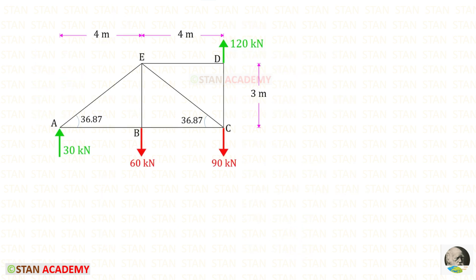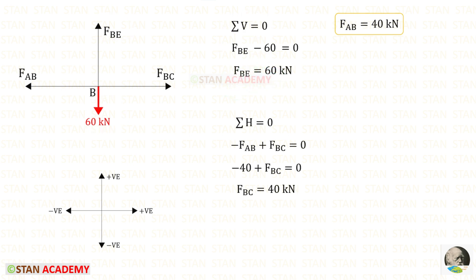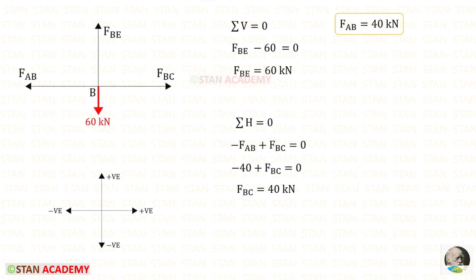Taking joint B to find member forces, applying Sigma V = 0: the upward force is positive and the downward load is negative, giving F_BE = 60 kN. Applying Sigma H = 0: F_AB acts towards the left (negative) and F_BC acts towards the right (positive). Applying the known value of F_AB = 40, we get F_BC = 40 kN.